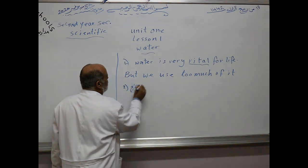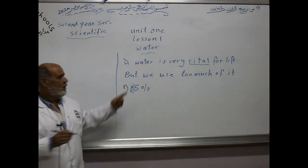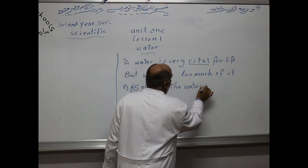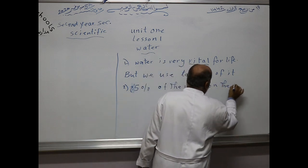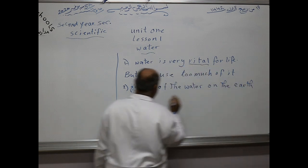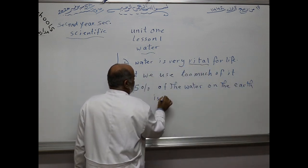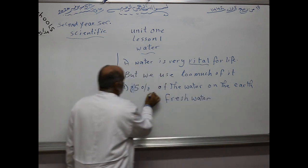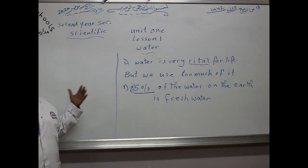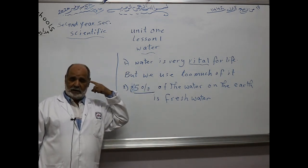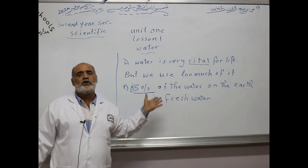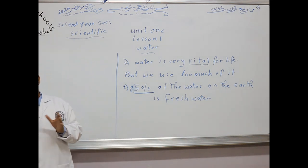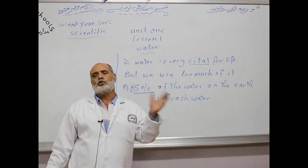Number two: 25% of the water on the earth is fresh water. What is the meaning of fresh water? It means the water that we can drink. We have two kinds of water: salt water and fresh water.